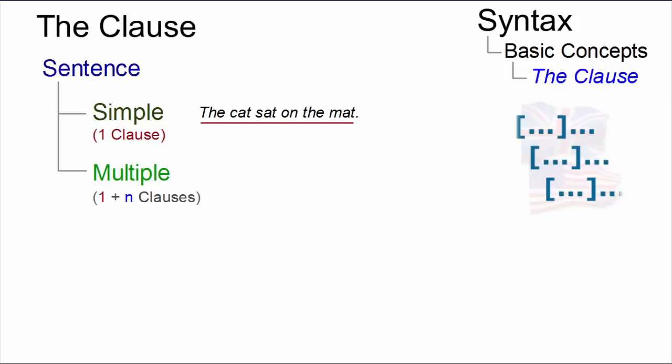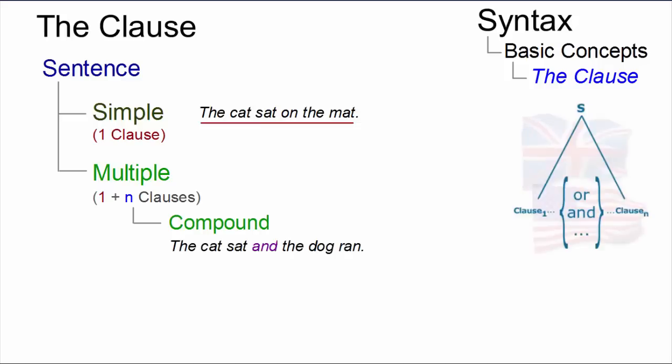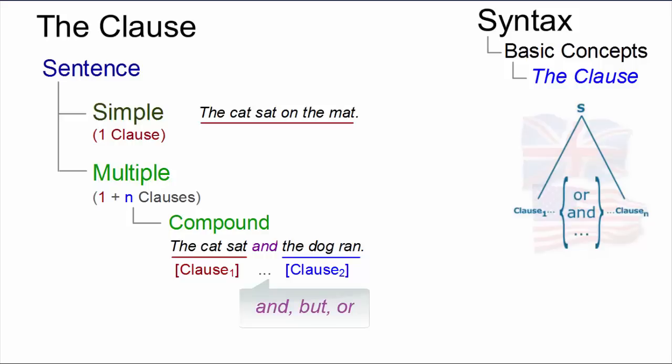If there is more than one clause in a sentence, we refer to the sentence as a multiple sentence. The relationship between the clauses in multiple sentences can be manifested in two ways. In compound sentences, such as 'the cat sat and the dog ran,' the clauses are coordinated with each other by means of a coordinator. The most familiar coordinators used to coordinate clauses are the conjunctions and, but, and or.